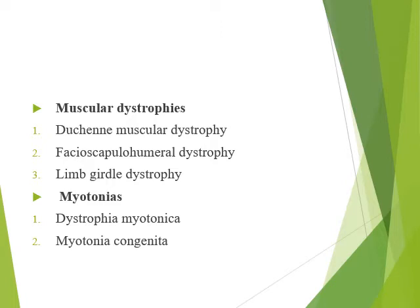Metabolic causes include Cushing's, steroid use, hypothyroidism, thyrotoxicosis — both hypothyroidism and thyrotoxicosis cause muscle weakness — calcium or potassium metabolism disorders, and toxins like ethanol or drugs. We also have muscular dystrophies; we will cover the most important ones like Duchenne and Becker. Myotonic disorders include dystrophia myotonica and myotonia congenita.